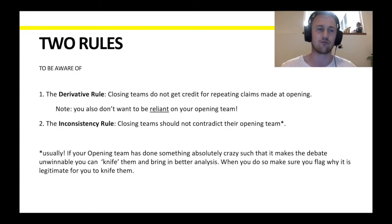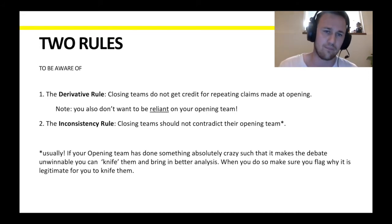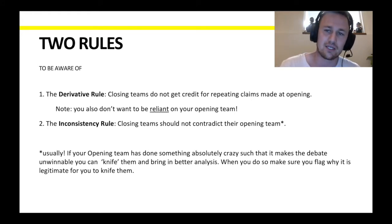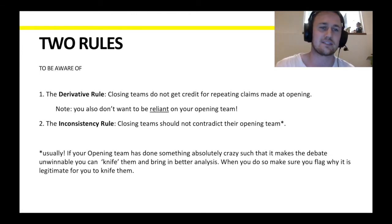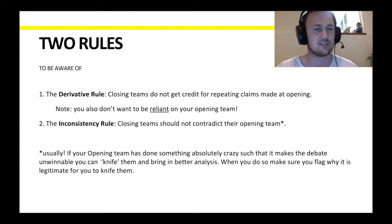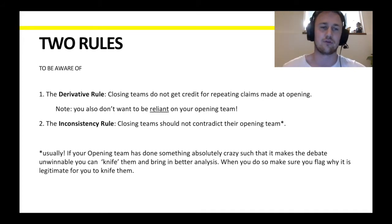There are two rules to be aware of when writing your extension. The first, and definitely most important, is what I'd call the derivative rule: closing teams do not get credit for repeating claims made at their opening. If your opening makes a big argument about why this fixes racism, and you make another argument about why it fixes racism, they're going to get a lot more credit for that most of the time.